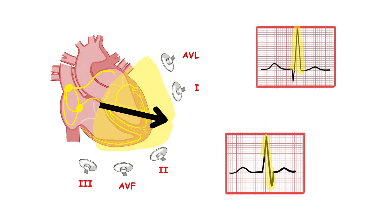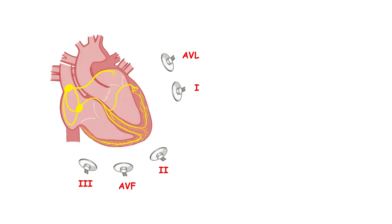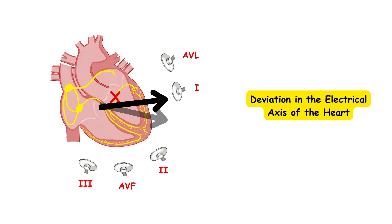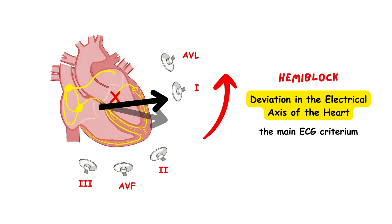Now let's see what happens when one of the fascicles is blocked. When one of them is blocked, the whole work falls on the non-blocked fascicle, so the non-blocked fascicle must spread the impulse to the whole ventricle. Since the impulse is conducted mainly through the non-blocked fascicle, the direction of the depolarization wave will change. Therefore, we expect a change in the main vector, which is a deviation in the electrical axis of the heart.